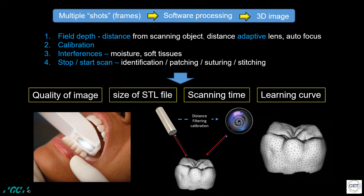Auto-calibration is another important function, required to allow a constant scan without distortions. The stop-start function is an extremely important software feature — the possibility to stop at some point and restart from the same or another point allows maximum flexibility for the operator. These important functions are essential for a fast and accurate scan, with minimal file size required and a minimum learning curve. The final result is the STL file.